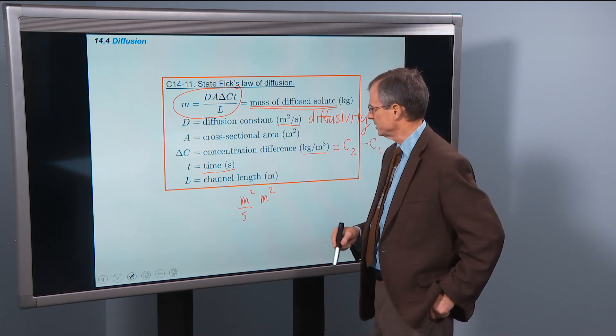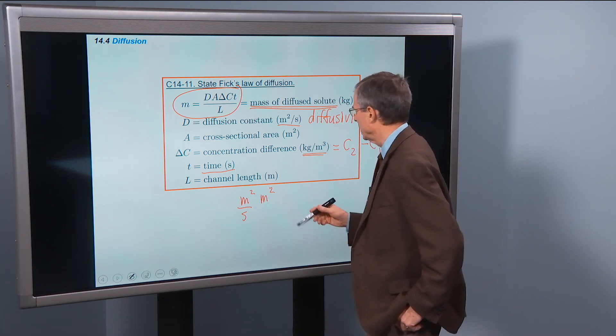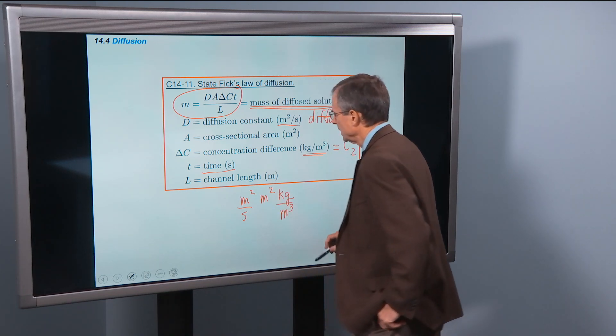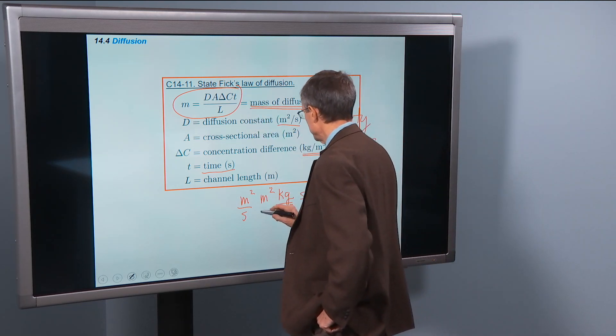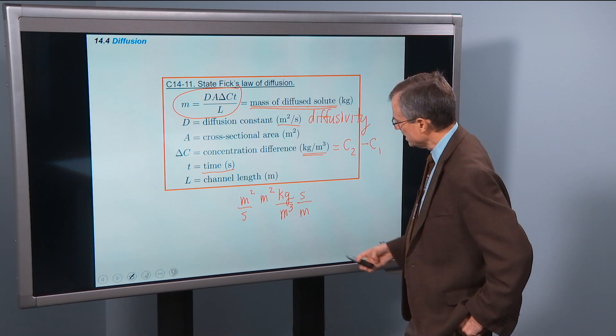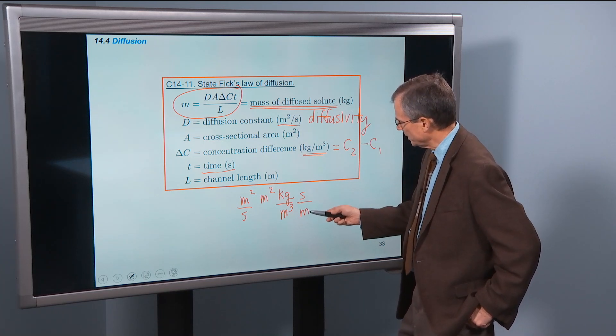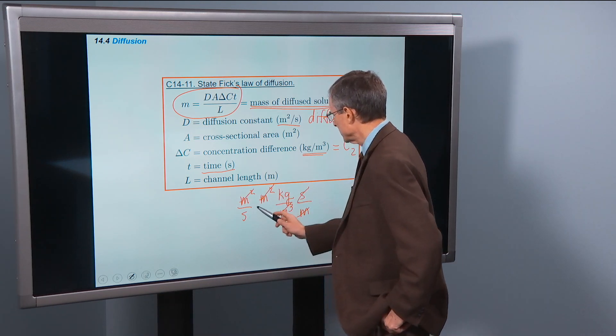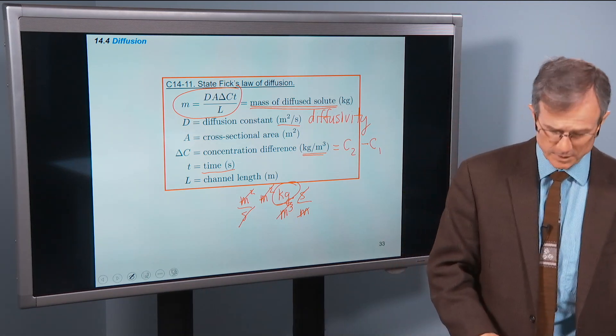But here we'll just measure it in the mass of the food dye, for example, per unit volume. So that's kilogram per unit volume. That's delta C. T is measured in seconds and length is measured in meters. So let's see if we get anything sensible out of this. Meter squared times meter squared is meters to the fourth. In the denominator, meters cubed times meters is meters to the fourth. All the meters cancel. Happy day. Seconds cancel. We end up just with kilograms. So that'll give us the mass of diffused solute for this situation.